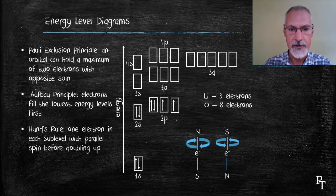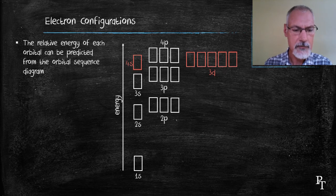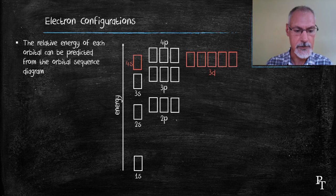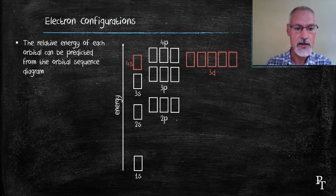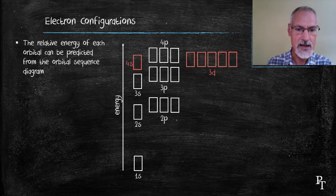Let's look at a few more electron energy diagrams and something called electron configurations. At first glance, the energy level diagram seems to follow a logical sequence: 1s, 2s, followed by 2p, 3s, followed by 3p. But now notice these orbitals highlighted in red.